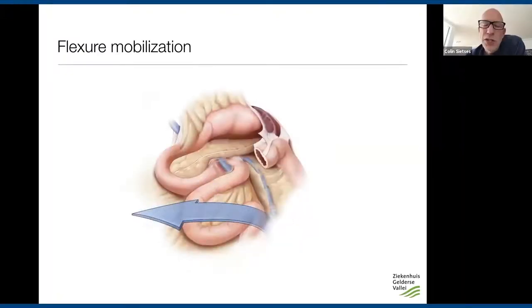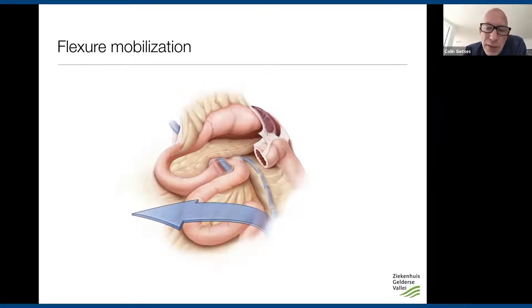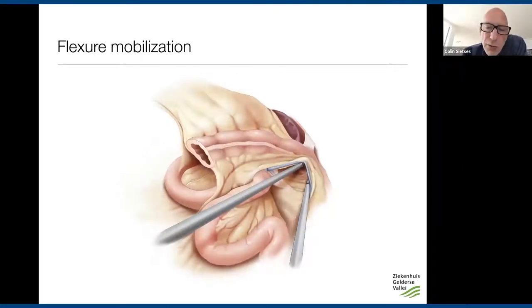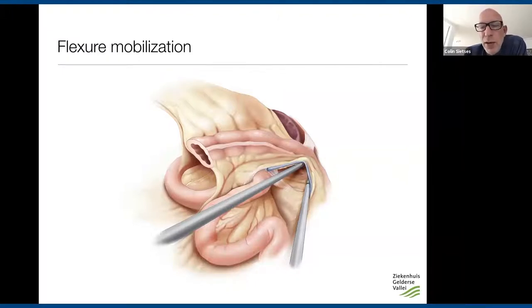The first step is getting your surgical reference points — the Treitz ligament and inferior mesenteric vein — into the operative field. Get the small bowel out of the way using gravity by tilting the patient all the way to the right, and fix the patient firmly to the operating table. Once reference points are visible, create a tunnel or plane behind the mesentery of the transverse and descending colon and Gerota's fascia, extending as lateral as possible.